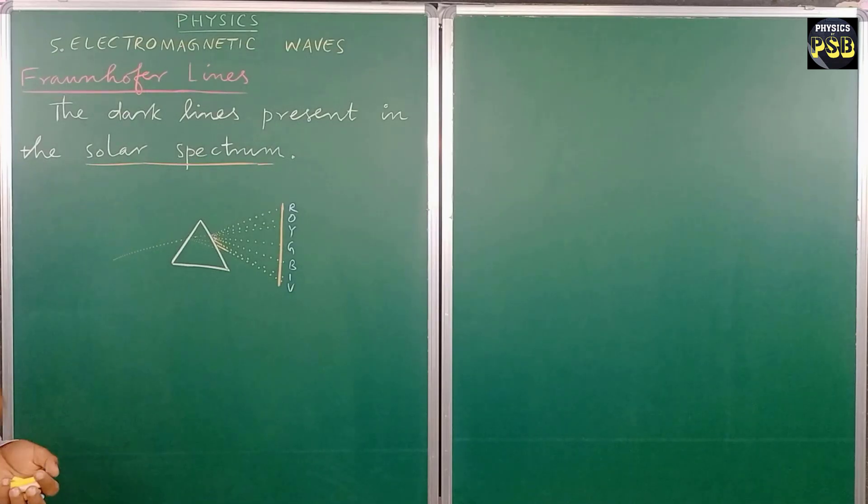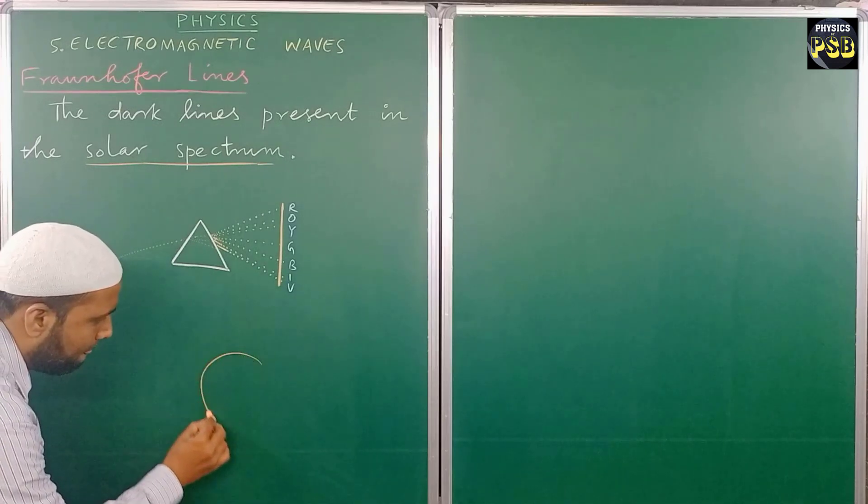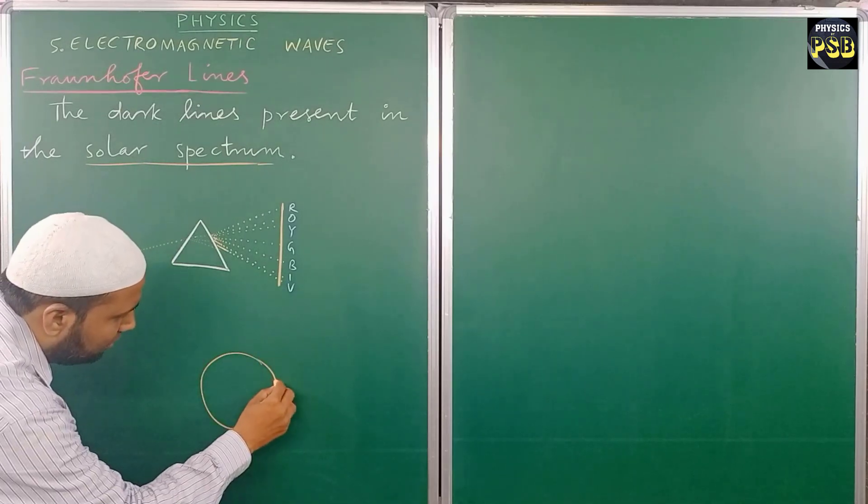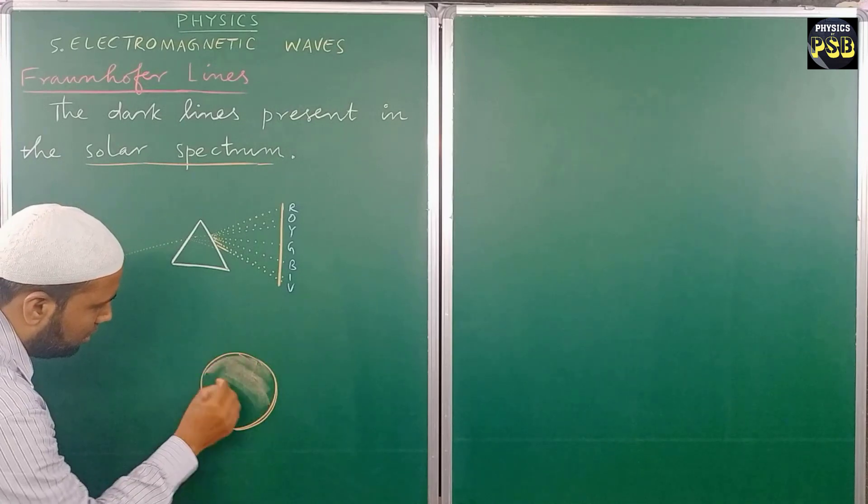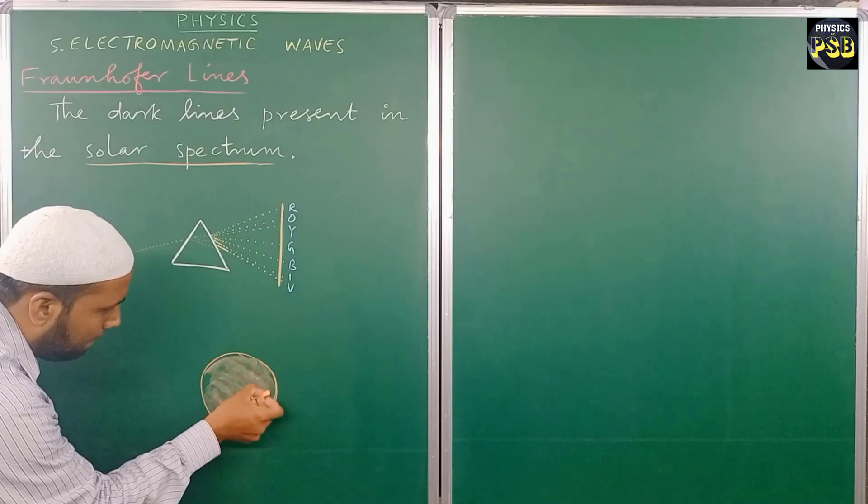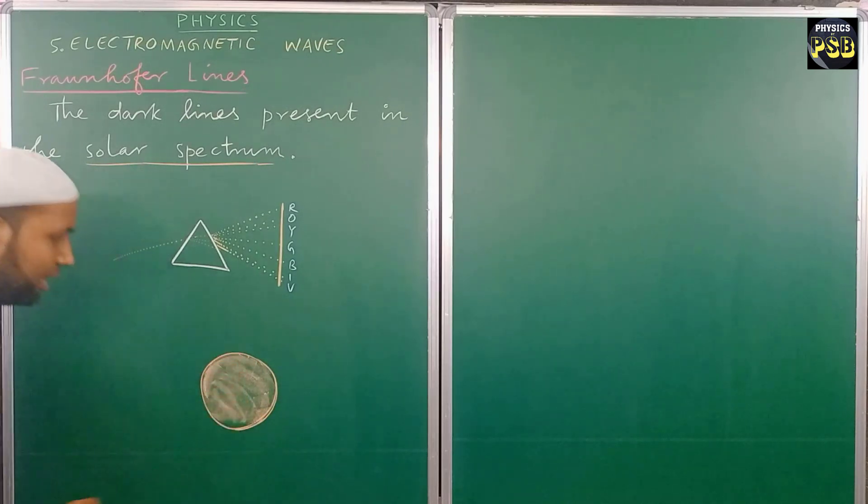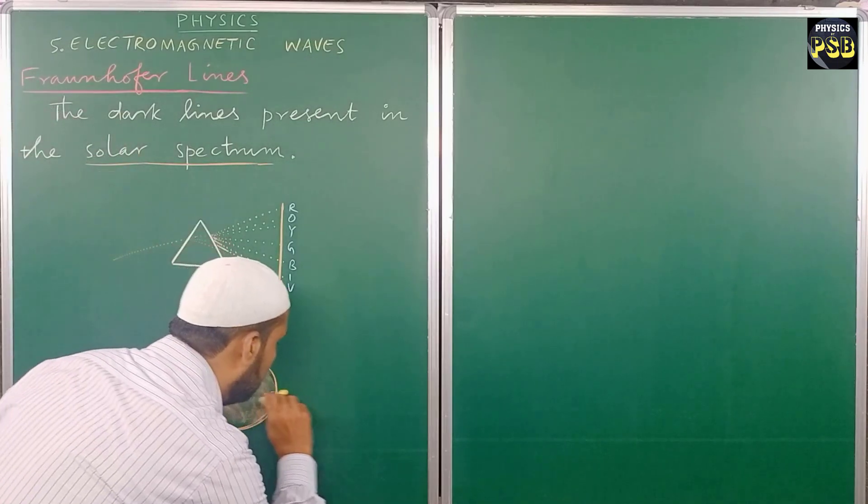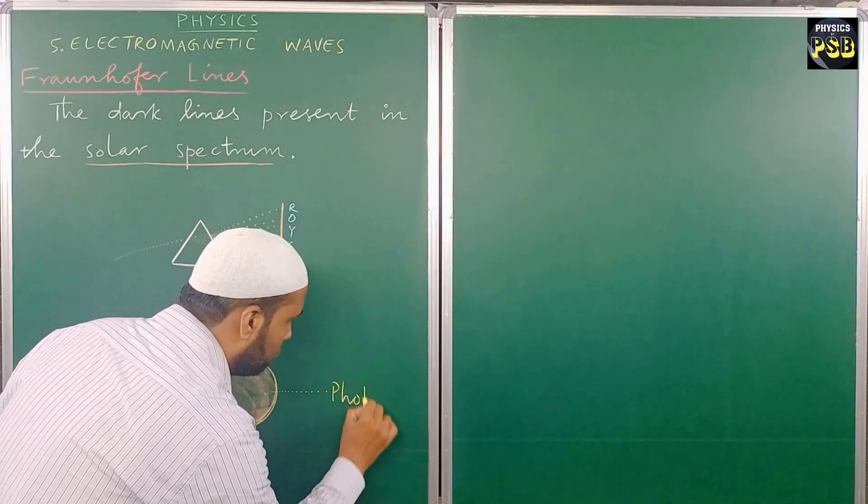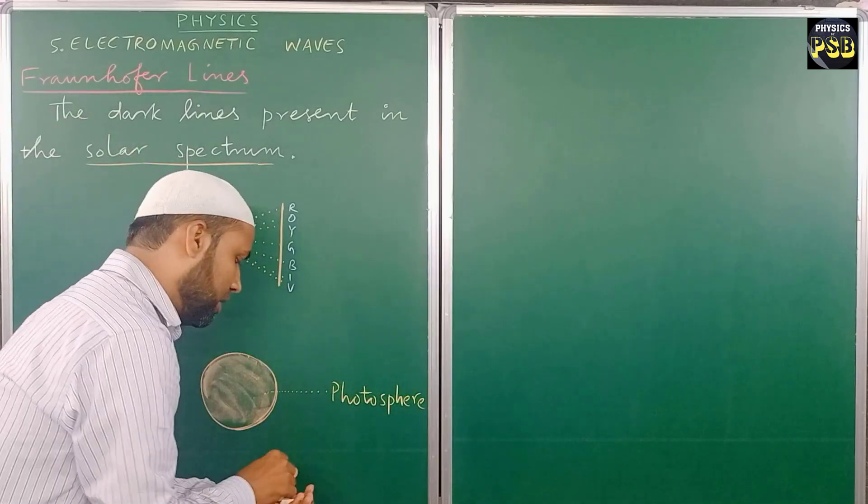To know that, we must know the structure of the sun. The core of the sun, which is the central portion of the sun, is at very high temperature. This core is named as photosphere. The temperature is 14 million Kelvin.